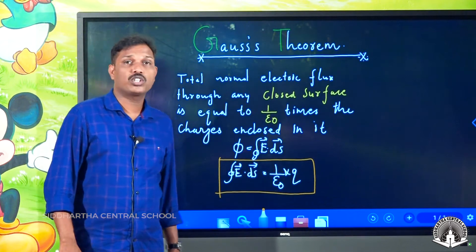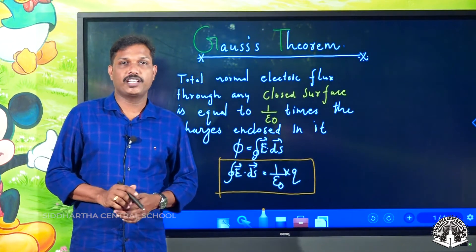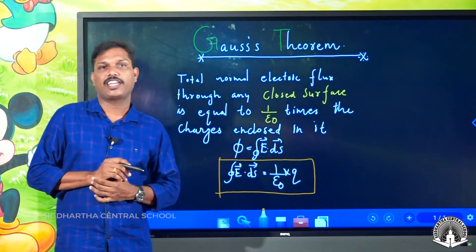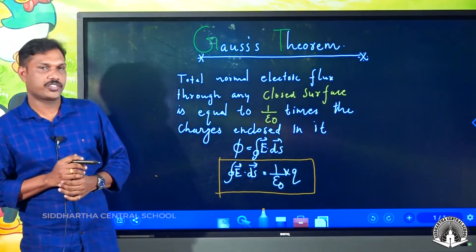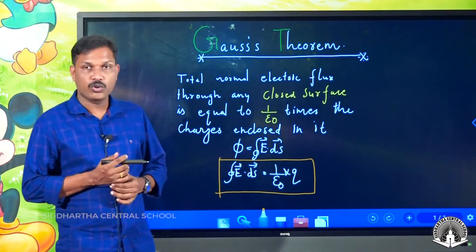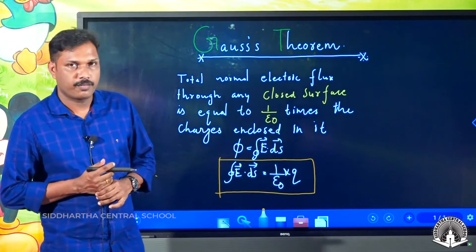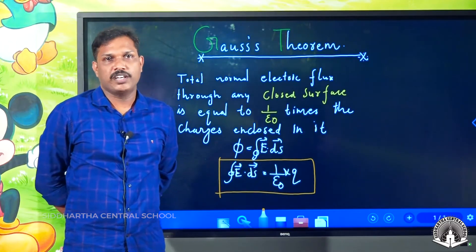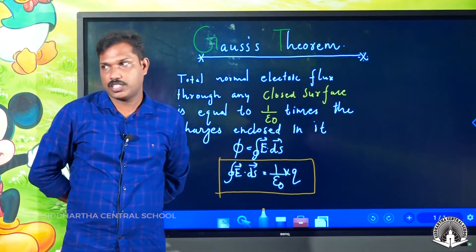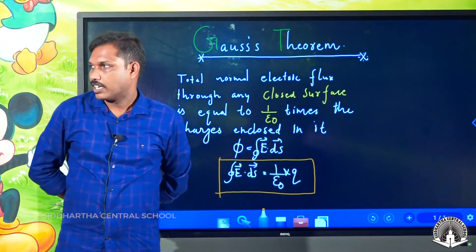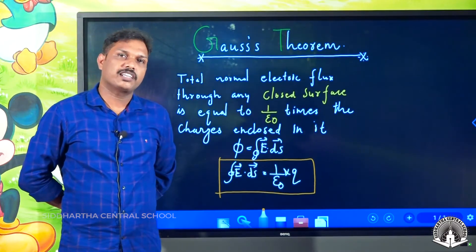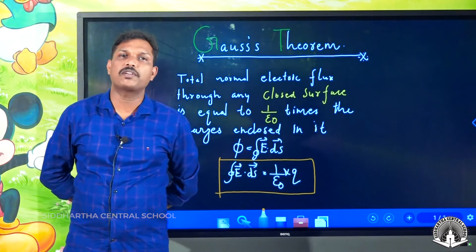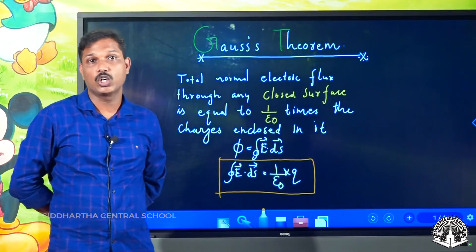The most important topic in this chapter is Gauss Theorem in Electrostatics. Do you know who is Gauss? Gauss is considered as the prince of mathematics. In other studies, Gauss is considered a giant.